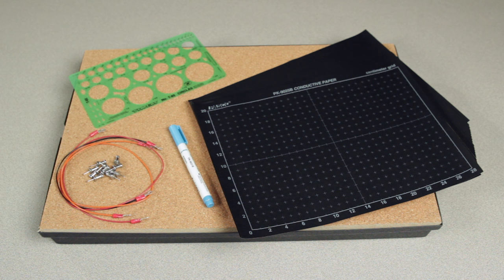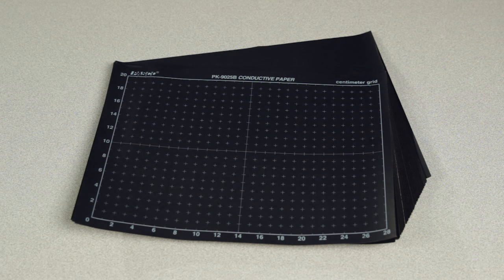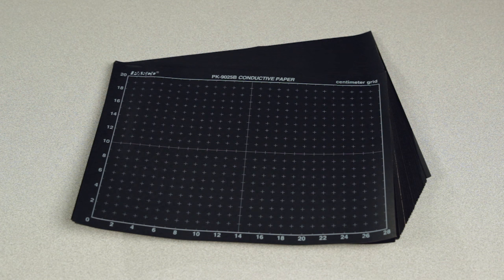Each kit contains the following elements: 100 sheets of semi-conductive paper, each with a 23 by 30 cm grid on it.